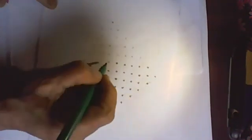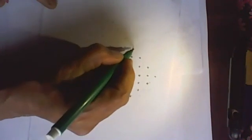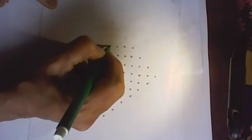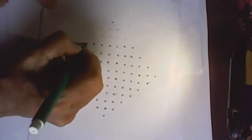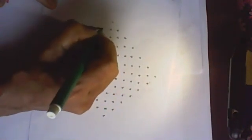Now we repeat the same pattern on the other side also: nine, seven, five, three, and one. Okay, the dots are being drawn.